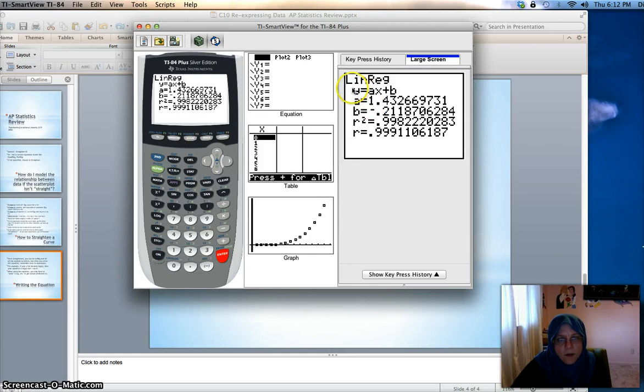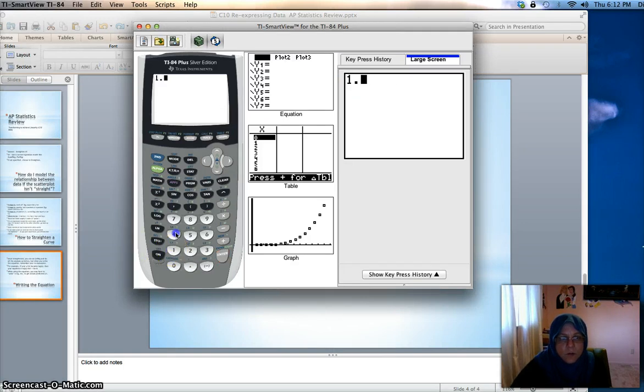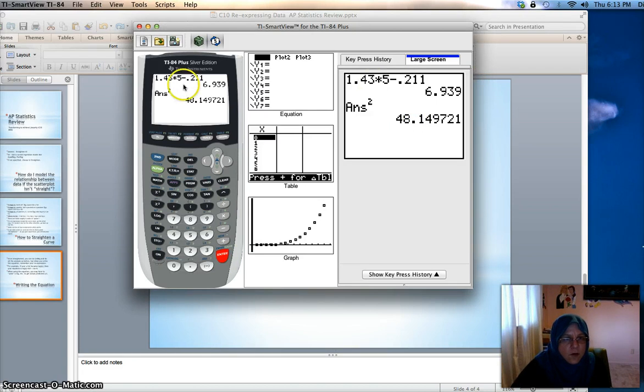So maybe this was pinheads predicted equals 1.43 times zygotes plus negative 2.11. I'm obviously just making stuff up here, but you would just plug in the words. When you're using the model to make a prediction, I plug in 5 for the number of zygotes and I'm trying to get a number of pinheads out. So when I plug 5 into this equation, I do 1.43 times 5 minus 0.211. This is not my number of pinheads, this is the square root of pinheads. So to get pinheads, I actually need to square it. The model would predict 48.15 pinheads for 5 zygotes.